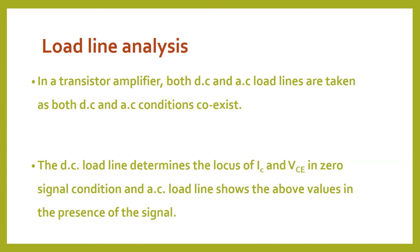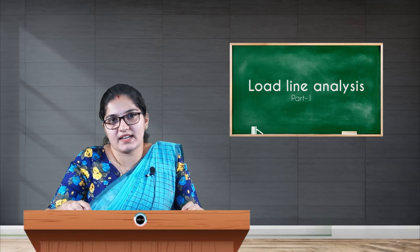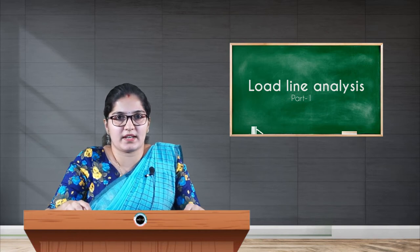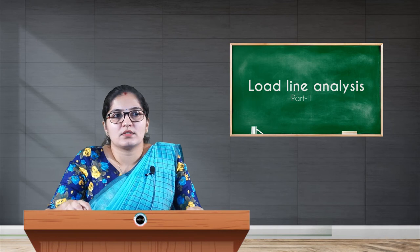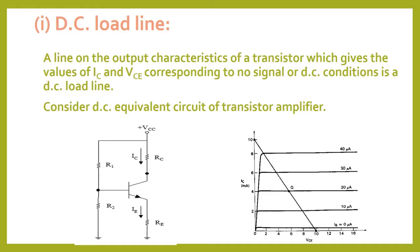What is load line analysis? In a CE amplifier, both DC and AC conditions coexist. So both DC and AC load lines are considered. Therefore we can draw AC equivalent circuit and DC equivalent circuit separately. The DC load line determines the locus of IC and VCE in zero signal condition, and the AC load line shows those values in the presence of an AC signal.